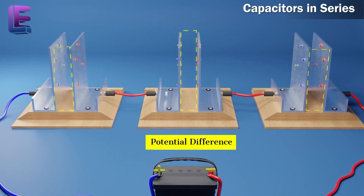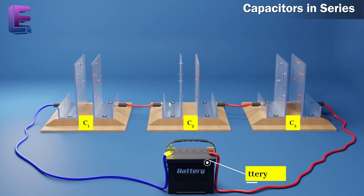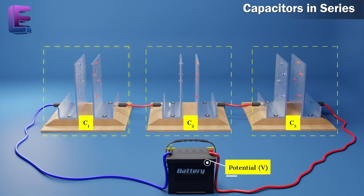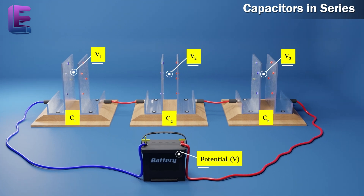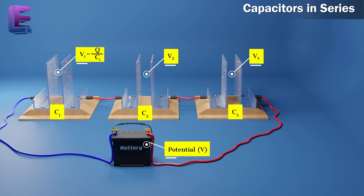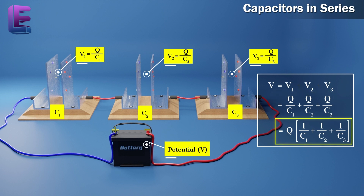As there is only one path for charge to flow in a series circuit, all the capacitors have an equal magnitude of charge. However, their potential differences vary. If capacitors of capacitance C1, C2, and C3 are connected in series to a battery resulting in a potential difference of V between the ends of the circuit, the potential differences that result are V1, V2, and V3. Then V1 is equal to Q by C1, V2 is equal to Q by C2, and V3 is equal to Q by C3. The total potential difference V is equal to V1 plus V2 plus V3, which equals Q(1/C1 + 1/C2 + 1/C3).